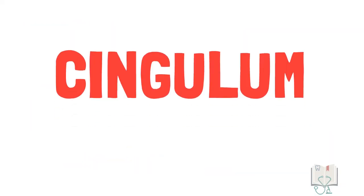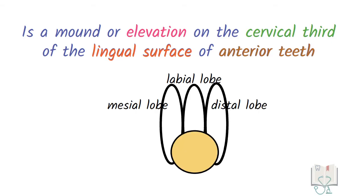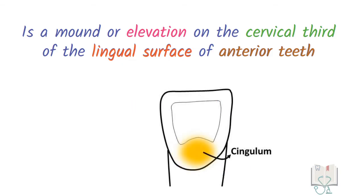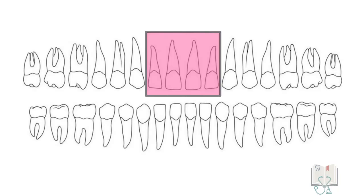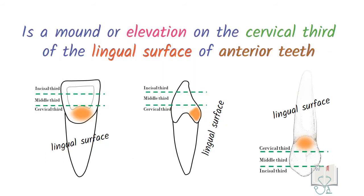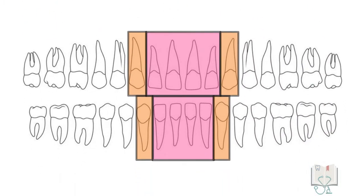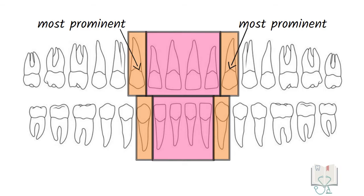Cingulum is a mound or elevation on the cervical third of the lingual surface of anterior teeth. In a tooth formed of four lobes, it is the lingual developmental lobe that forms the cingulum. Cingulum is seen in all maxillary incisors, mandibular incisors, and in all canines. They are always on the lingual surface and limited to the cervical third. The largest cingulum is seen in the maxillary canine.